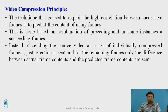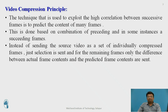The technique used for video compression exploits high correlation between successive frames to predict the content of many frames. This is done by a combination of preceding and succeeding frames. Instead of sending the source video as a set of individually compressed frames, just a selection is sent, and for the remaining frames only the difference between the actual frame contents and the predicted frame contents is sent.